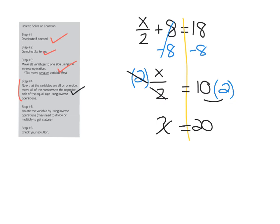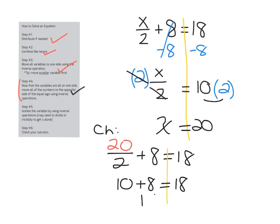Let's check if our answer is correct. I do 20 in place of x. Here's my check. 20 divided by 2 plus 8. Let's see if that equals 18. 20 divided by 2 is 10. 10 plus 8 equals 18. So, we know that x does in fact equal 20 and we were correct.